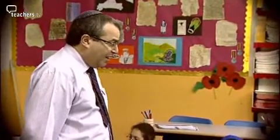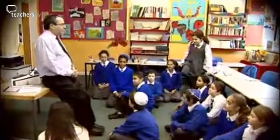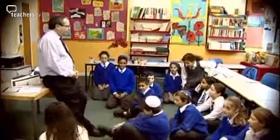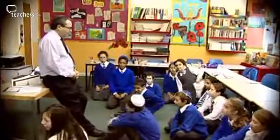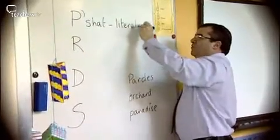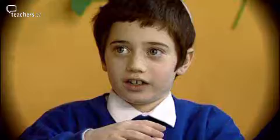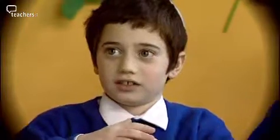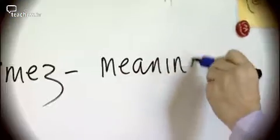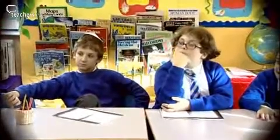Laurie Rosenberg is passionate about storytelling. His approach is to incorporate the Jewish technique of Pardes, asking the pupils to look at the story from four different dimensions: What does it say? What does it mean? What is the story? And what is the hidden meaning?